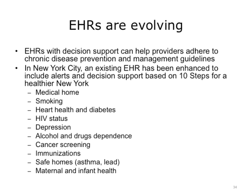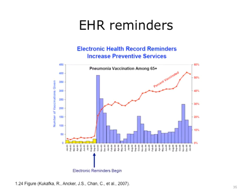New York City provides perhaps one of the earliest examples of how electronic health records are being used for public health purposes. An existing electronic health record has been enhanced to include alerts and decision support based on 10 Steps for a Healthier New York. Notice the 10 steps listed are connected to the leading causes of preventable death discussed previously — smoking and chronic diseases, which include heart disease and diabetes.